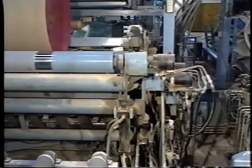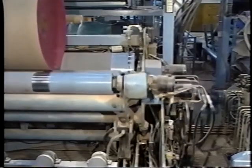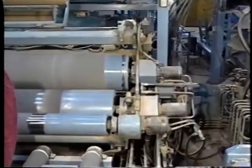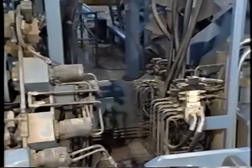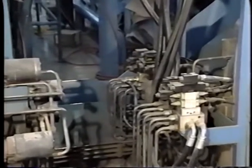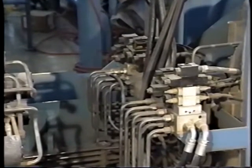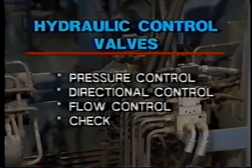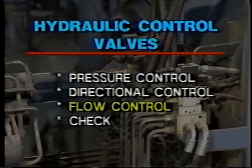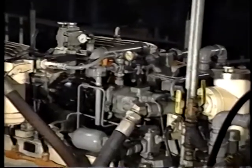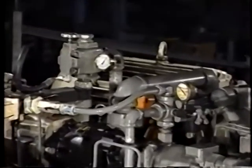In a hydraulic system, actuators convert hydraulic energy, but to do useful work like moving loads and to prevent damage to the system, the hydraulic energy has to be controlled. Typically, four kinds of hydraulic valves are used to control the transmission of energy: pressure control valves, directional control valves, flow control valves, and check valves. Let's begin with pressure control valves.